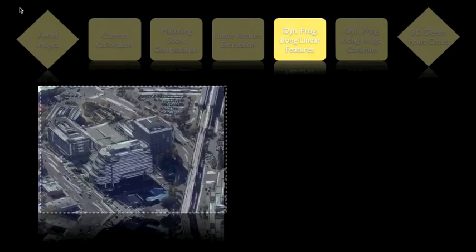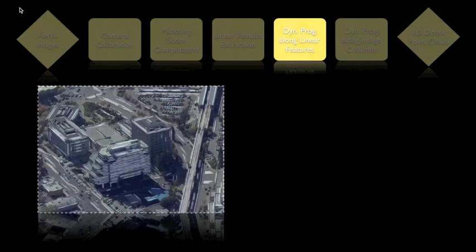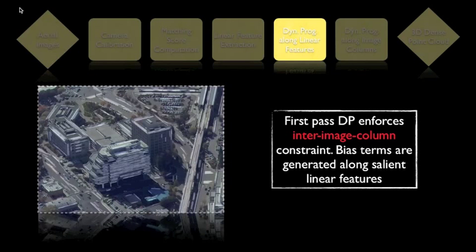The salient linear features in the 2D image, which represent meaningful structures in 3D, enforce our inter-image column constraint on the reconstruction.